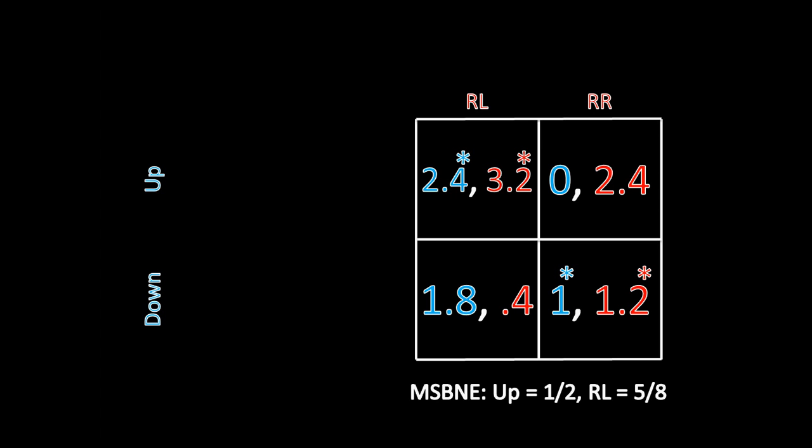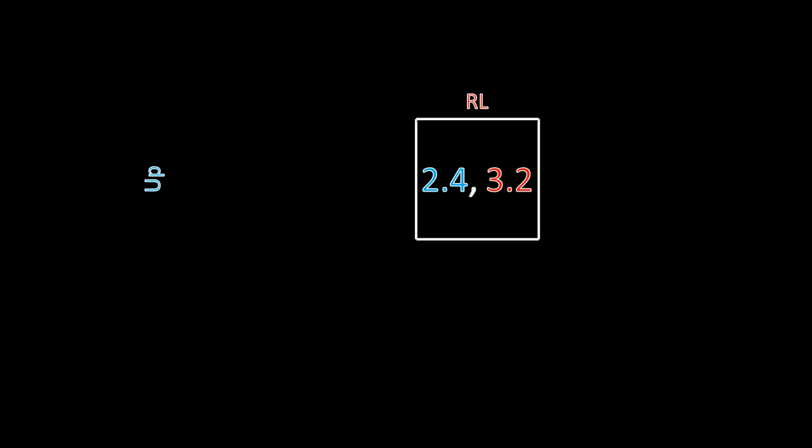One final thing to note: in the Bayesian-Nash equilibrium where player one chooses up, the prisoner's dilemma type chooses right, and the stag hunt type chooses left. From player one's perspective, it looks like player two is mixing — sometimes playing right, sometimes playing left. But the types themselves are not mixing; the types are playing pure strategies. This previews something we'll encounter later: Nash equilibria in mixed strategies can be interpreted not as players actually mixing, but as multiple types of a player each pursuing a pure strategy, where uncertainty makes it appear to others as though a single player is mixing rather than multiple types playing pure strategies.